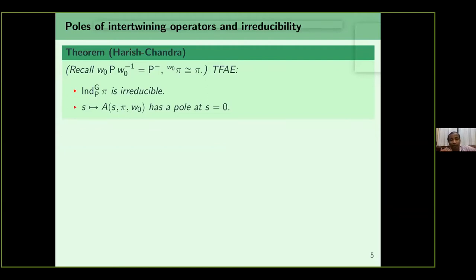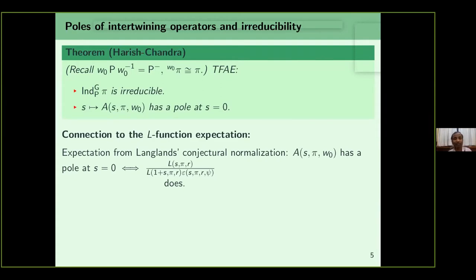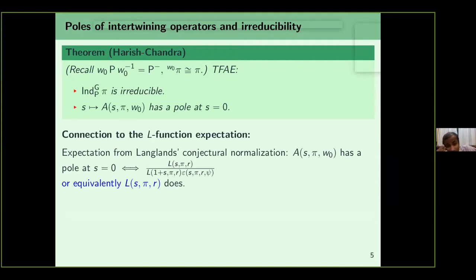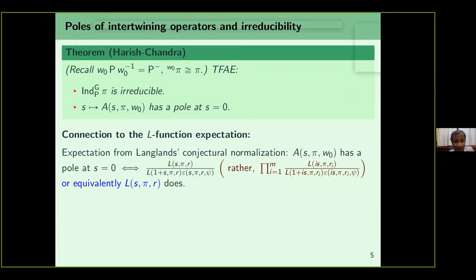The irreducibility should correspond to the L-function having a pole at s equals zero, related by Langlands' conjectural normalization of intertwining operators. The expectation is that the intertwining operator has a pole at s equals zero if some ratio of L-functions also has a pole. The denominator consists of local L-functions and epsilon factors, which cannot have a zero and are not expected to have a pole at zero. Therefore this quotient has a pole at s equals zero if and only if the L-function itself has a pole at s equals zero.